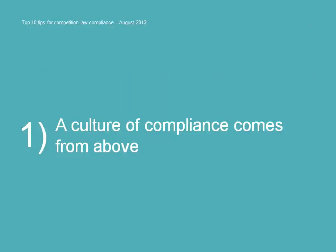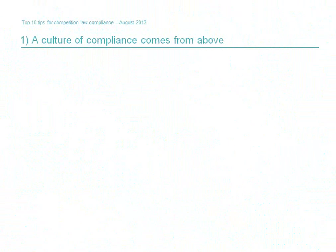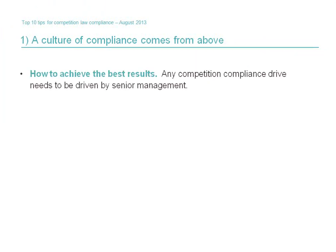Tip number one: the culture of competition compliance comes from above. Probably the most important message to take away from this webinar is that senior directors and CEOs of companies need to take personal ownership for their corporate competition compliance. This means paying more than lip service — senior staff need to engage with the issues, attending training sessions and bringing the issues forward in their day-to-day interactions with other members of the company.